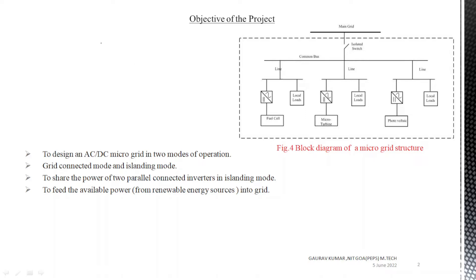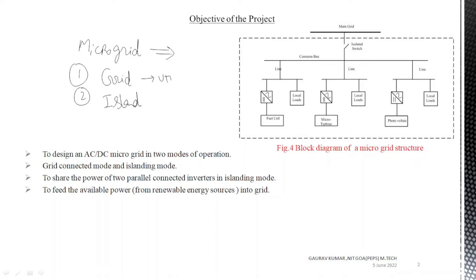Good morning class. The agenda for today is to discuss the microgrid and its operation in two modes: number one, grid connected mode, when the microgrid is connected to the utility grid, and number two, islanding mode, when the microgrid is used for isolated loads. So first, what do you mean by the microgrid?